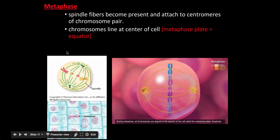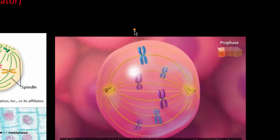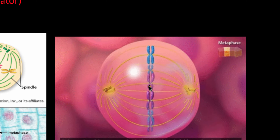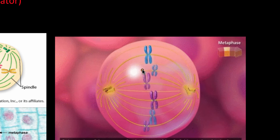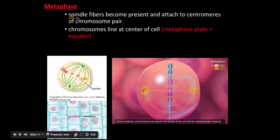Step two in cell division is metaphase. In metaphase, the chromosomes are lining up at the center of the cell — we call that the equator, or the metaphase plate, right in the middle. The centrioles have spindle fibers attached, and the spindle fibers grab and pull the chromosomes to guide them into the right locations.